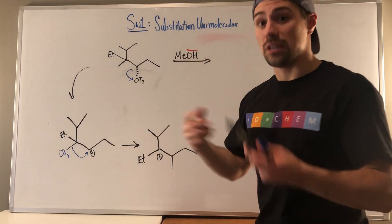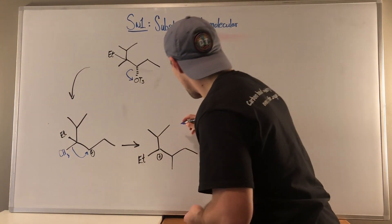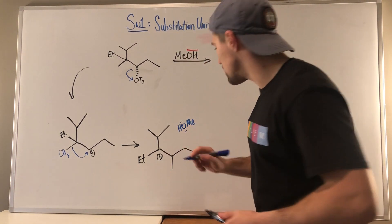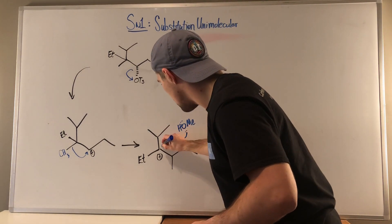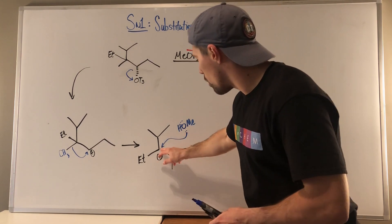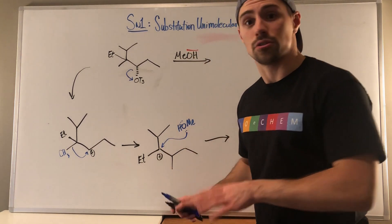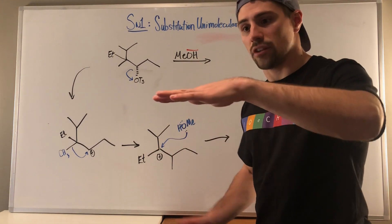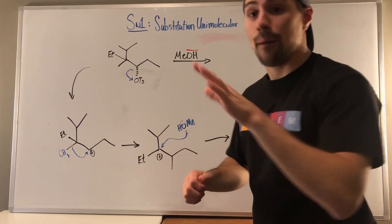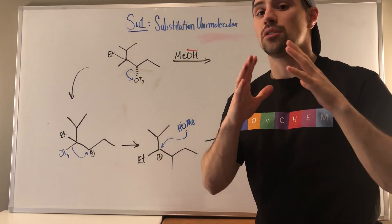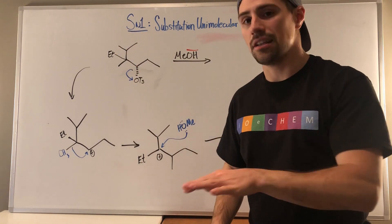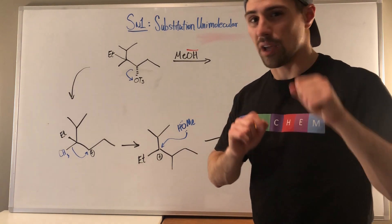Now we can bring in our methanol and do the attack. I'm going to attack with the oxygen — he has the electrons, he's calling the shots. Remember, at this point in time, this carbocation carbon is SP2, trigonal planar, flat — there's no preference as to whether we attack on top or on the bottom. It happens in a 50-50 split. So for the sake of your mechanism, just pick one, finish out the problem, and remember to slap a little plus enantiomer on your final answer. You'll get all the points.